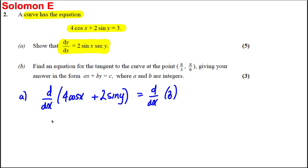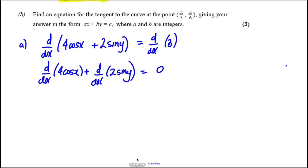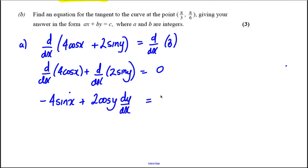Let's differentiate this separately. We can say that d/dx of 4cos(x) plus d/dx of 2sin(y) is going to be equal to 0. Differentiating 4cos(x) gives negative 4sin(x), and differentiating 2sin(y) gives plus 2cos(y) times dy/dx. That equals 0.